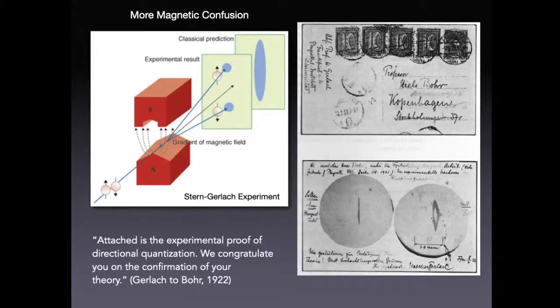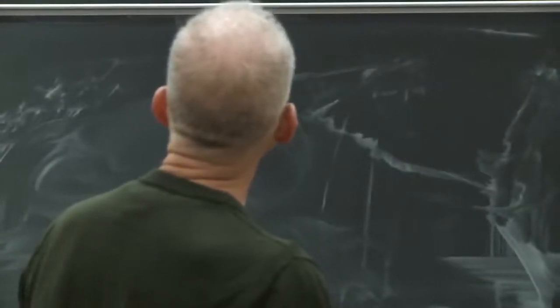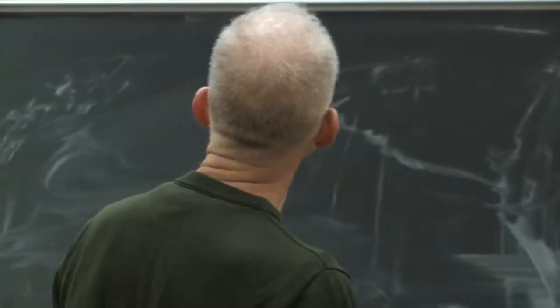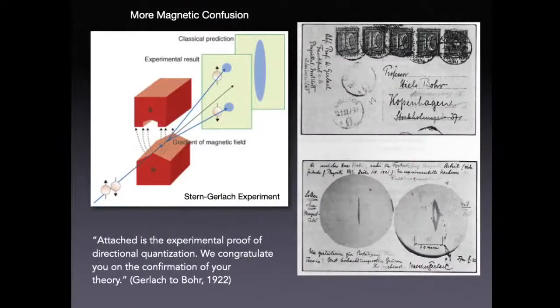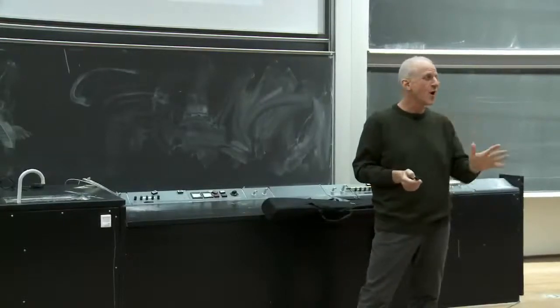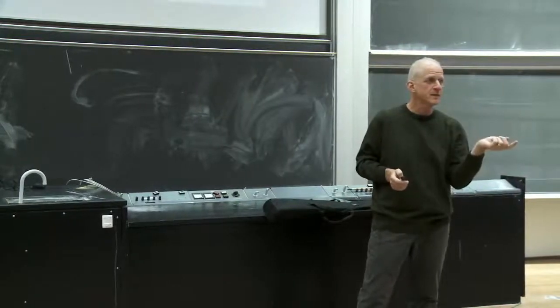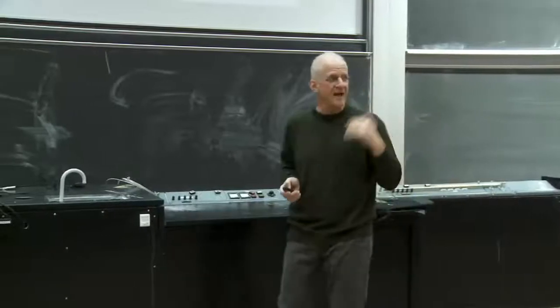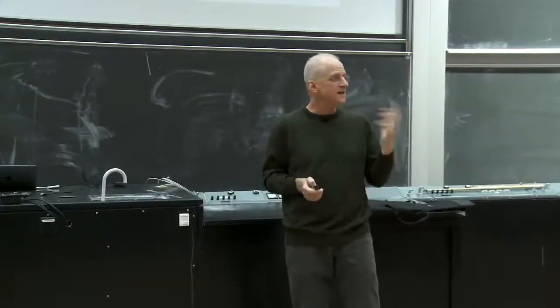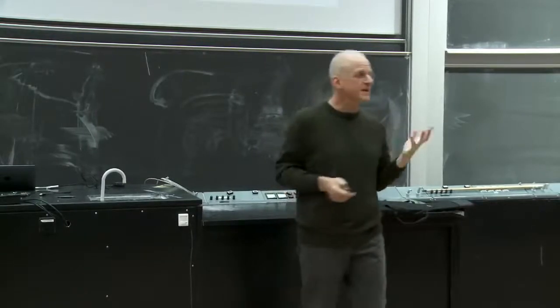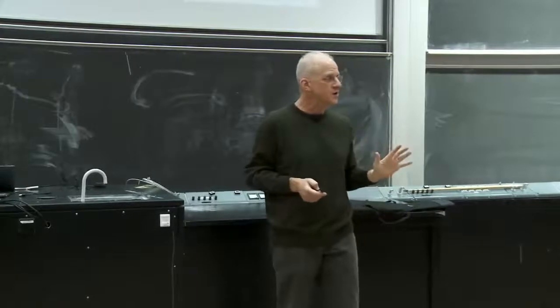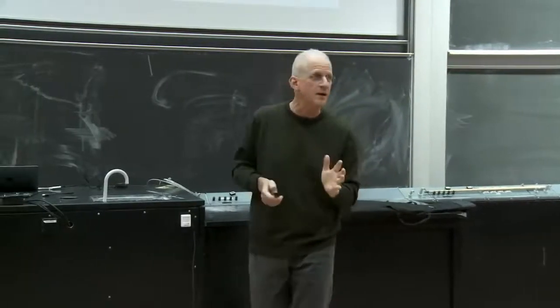And at the time, Gerlach wrote a letter to Professor Niels Bohr in Copenhagen. He writes, attached is the experimental proof of direction quantization. We congratulate you on the confirmation of your theory. Famous experiment, and these are the famous data. Every textbook has that data in it. And it's wrong. I mean, the data's not wrong. But it has nothing to do with Bohr's atom. Because in fact, silver, the atom that they used, doesn't have a magnetic moment from the orbit. It was something else. There was something else going on, but the something else wasn't known at the time. The something else that was going on is called spin. And it says that the electron itself, not just going around in the Bohr orbit as we learned, but itself has a magnetic moment. And it was that magnetic moment that was responsible for the splitting.